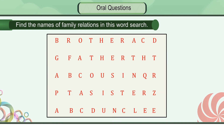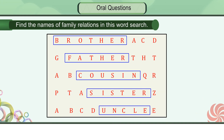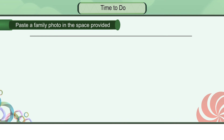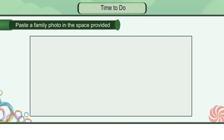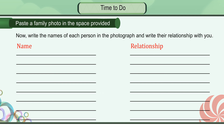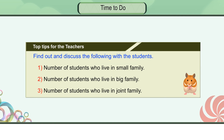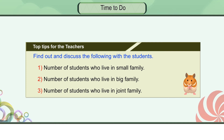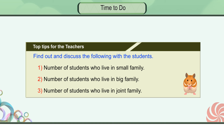Find the names of family relations in this word search. Time to do project work: Paste a family photo in the space provided. Write the names of each person in the photograph and write their relationship with you — Name, Relationship. Top tips for the teachers: Find out and discuss the following with students. 1. Number of students who live in a small family. 2. Number of students who live in a big family. 3. Number of students who live in a joint family.